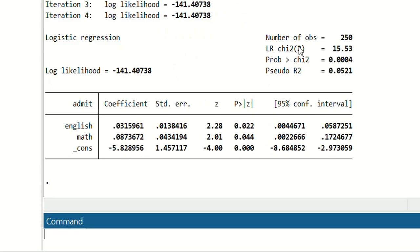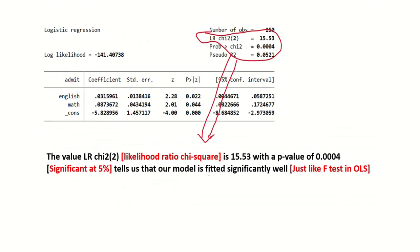The number of observations are 250. Then we have a value of LR chi-square which is 15.53, and then we have the value of coefficients. Instead of t-test we have the value for z-test over here. If we look at the value of LR chi-square, which is likelihood ratio chi-square, its value is 15.53 and its p-value is less than 0.05, so we will say that our model is fitted significantly well. Its interpretation is just like how we interpret F-test in OLS.